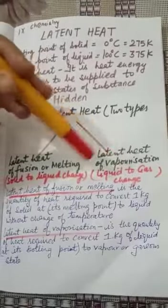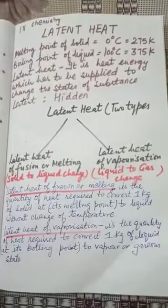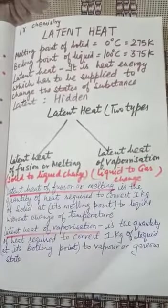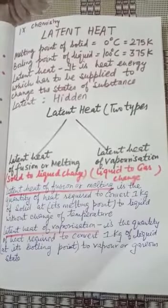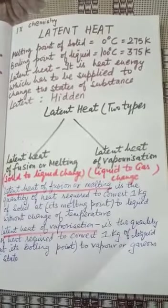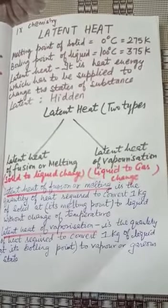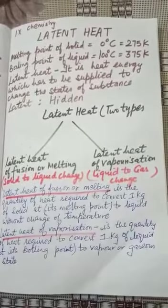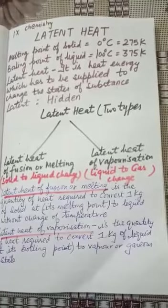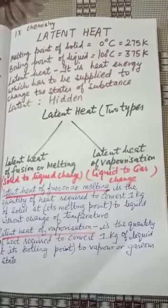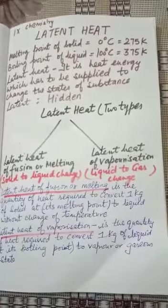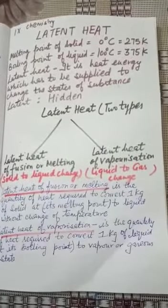Now, latent heat of vaporization. Let us understand this by taking the example of boiling of water. At 100 degrees Celsius, water starts boiling to form its gaseous state, or steam. The heat which is going into water is not increasing the temperature, as it is used to break the forces of attraction between the water particles and they become totally free and change into gaseous state. The temperature remains constant at 100 degrees Celsius.